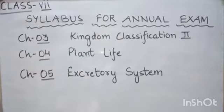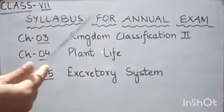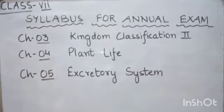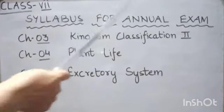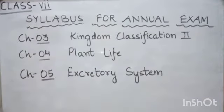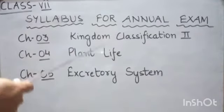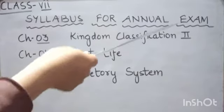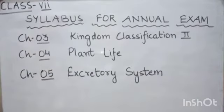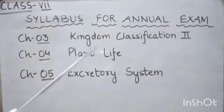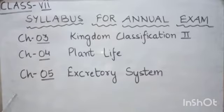So, you have to prepare these three chapters for your annual exam. Chapter number 3, Kingdom Classification Part 2. Chapter number 4, Plant Life. Chapter number 5, Excretory System.